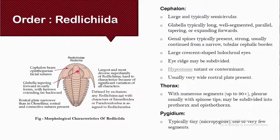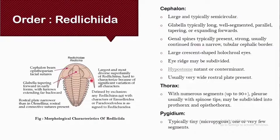The glabella is typically long and well-segmented, with glabella furrows and glabella lobes tapering and expanding forward. The genal spine is present in most Redlichiida, continuing from the narrow tubular cephalic border. Their eyes are large, crescent-shaped holochroal eyes.